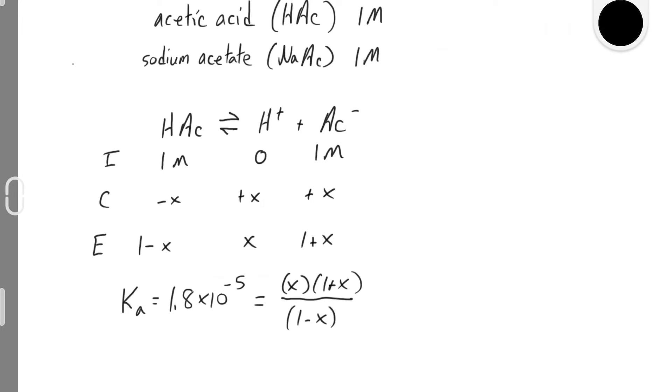We can solve this expression for x and calculate the H+ concentration. You can either solve this the long way using the quadratic formula, or you can cancel out the plus and minus x terms. When you finally have an H+ concentration, you can calculate the pH.